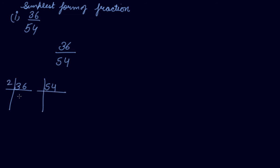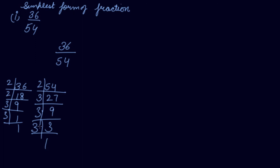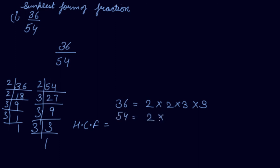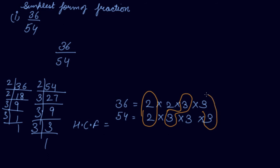Let's find the prime factors. For 36: 2 and 18, then 2 and 9, then 3 and 3 — so 36 equals 2 into 2 into 3 into 3. For 54: 2 and 27, then 3 and 9, then 3 and 3 — so 54 equals 2 into 3 into 3 into 3. We have learned how to find the HCF in the chapter 'Playing with Numbers.' The common factors are one pair of 2, one pair of 3, and another pair of 3. So HCF is 2 into 3 into 3, which equals 18.